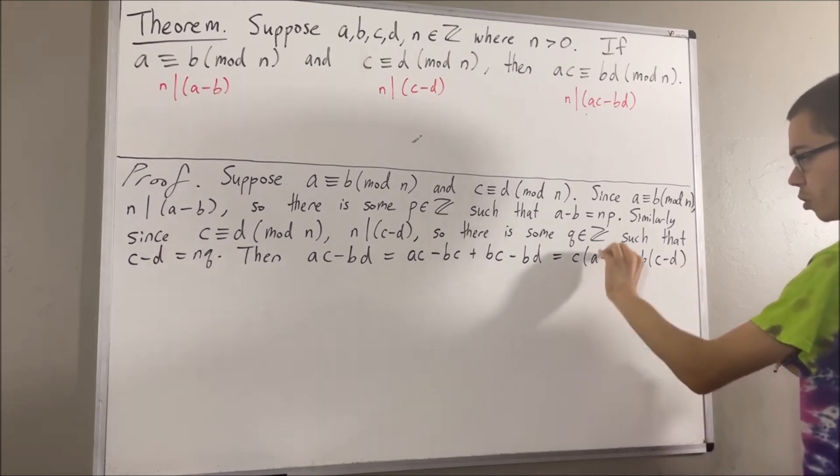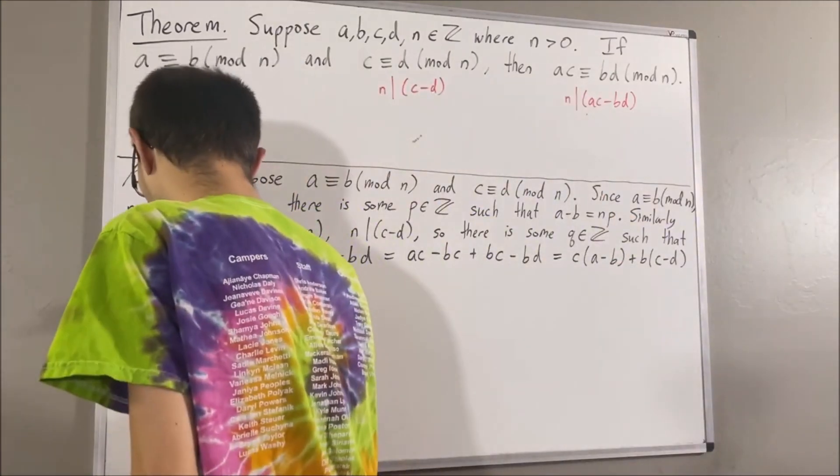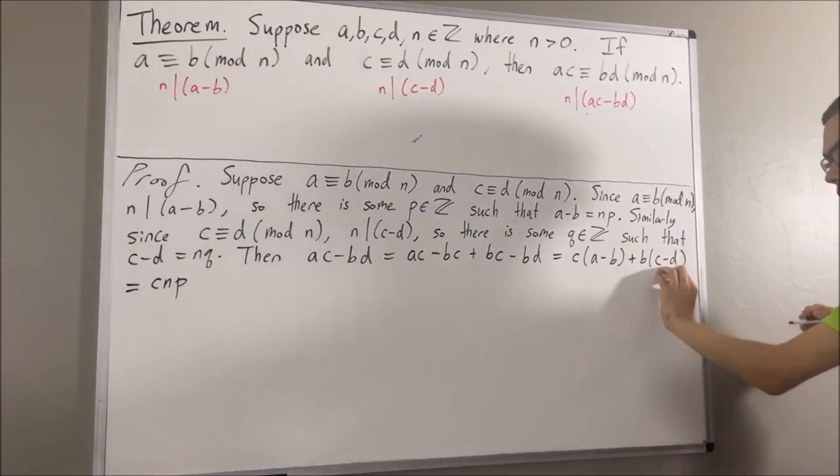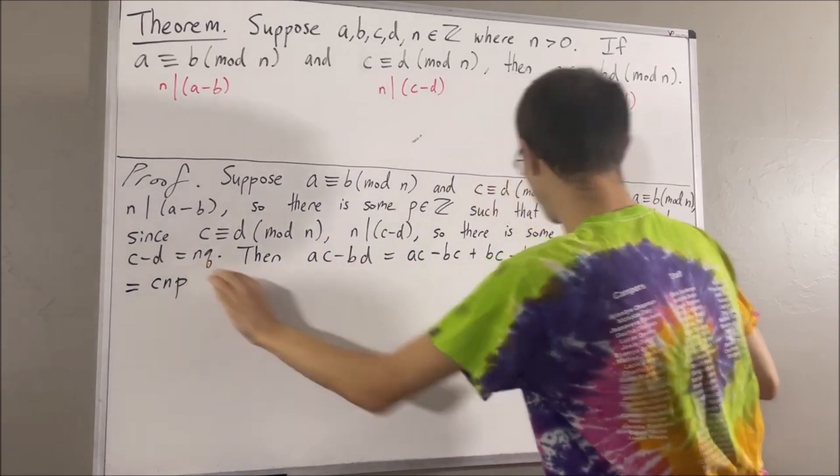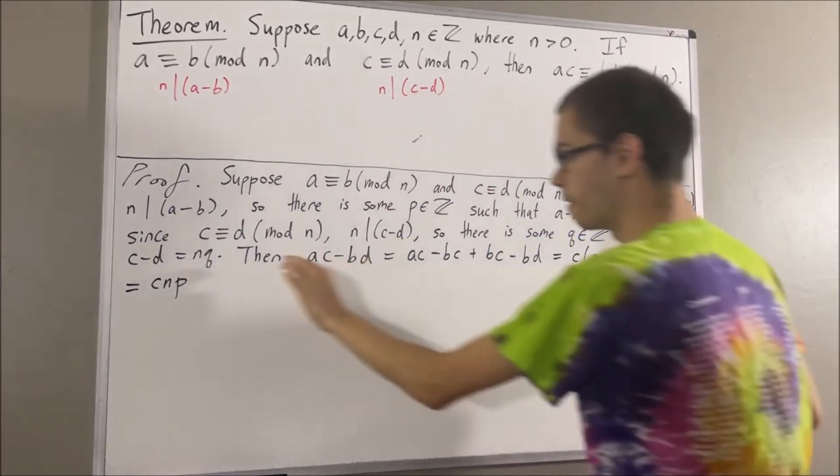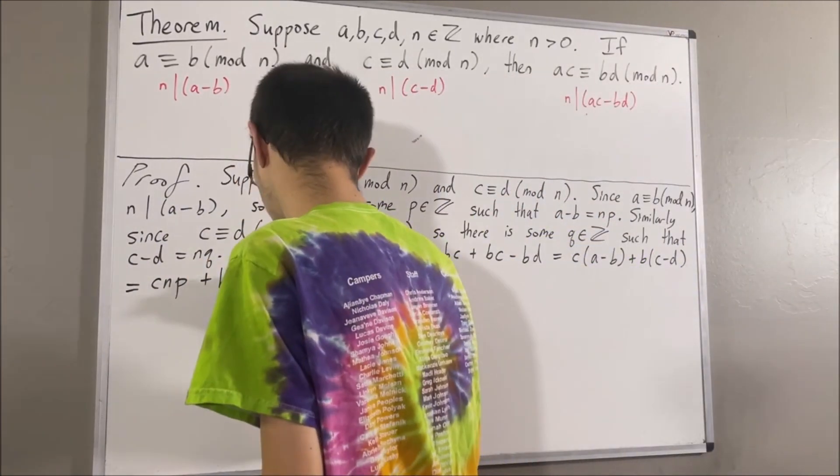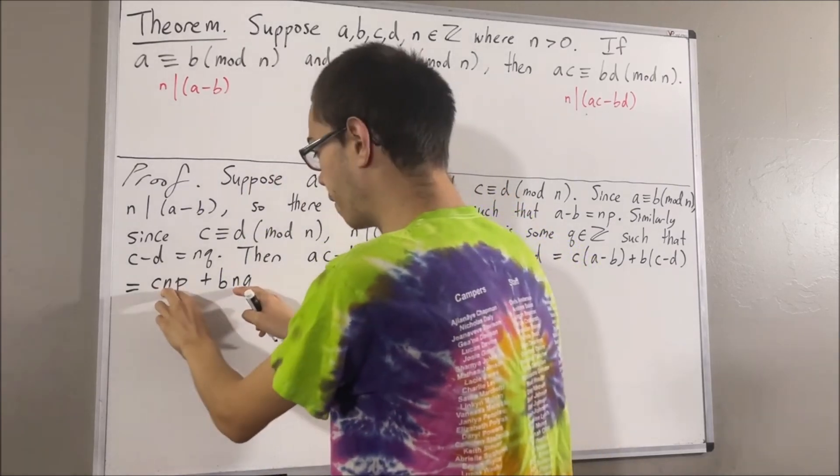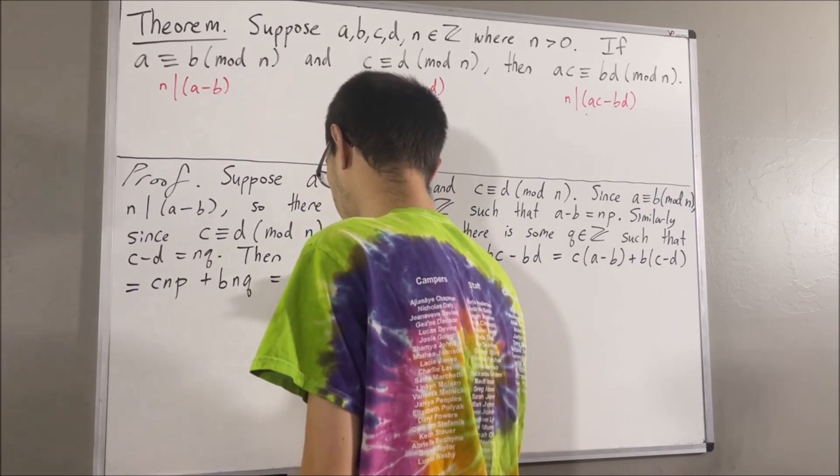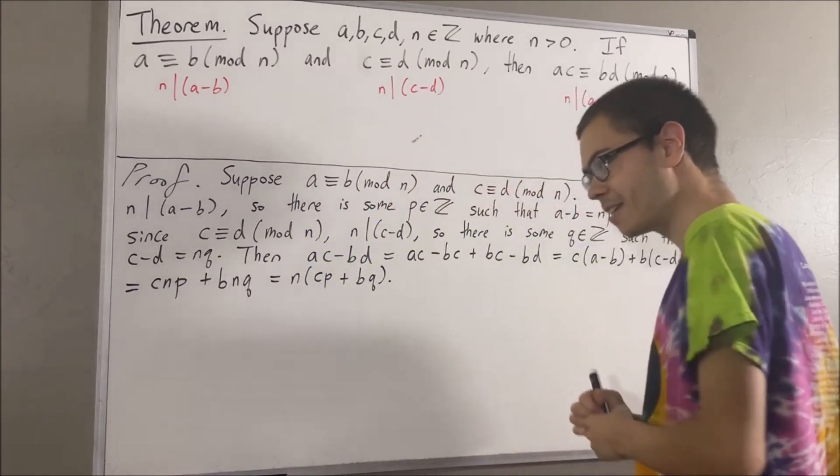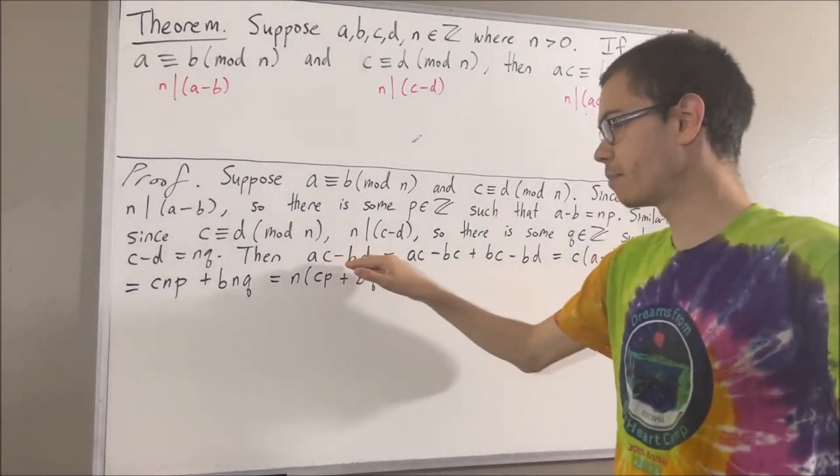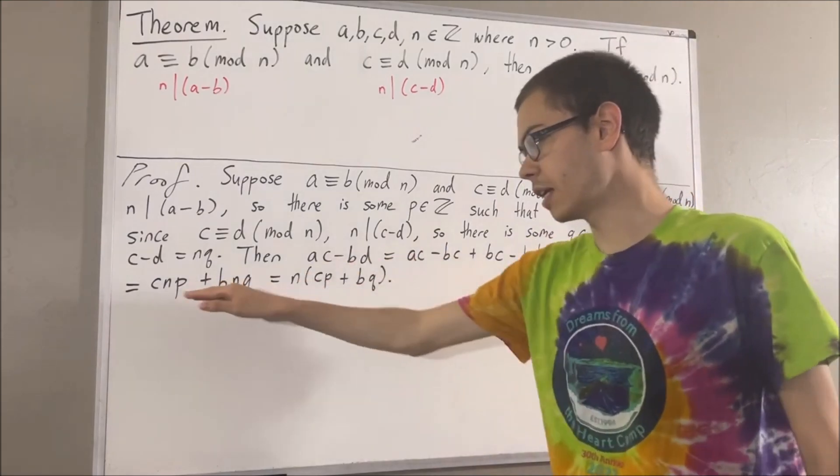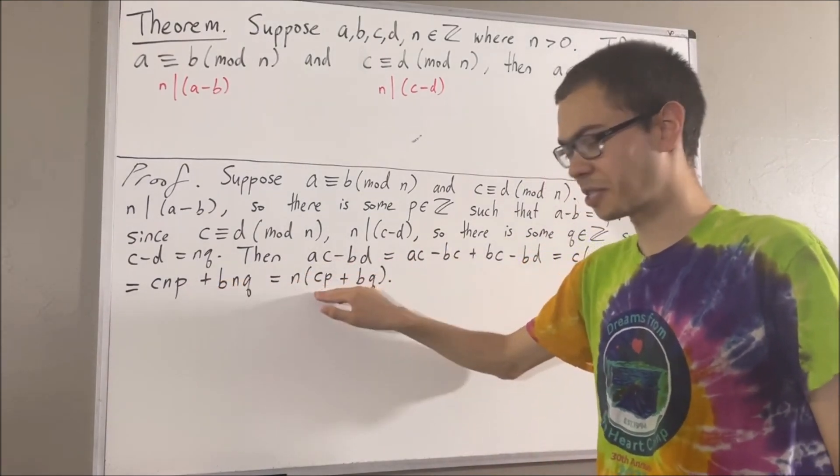And we know that a minus b is equal to np, so we can substitute a minus b for np. And we know that c minus d is equal to nq, so we can substitute c minus d for nq. And now we see that both of our terms have n in it, so we can factor out an n. And as you can see, we've expressed ac minus bd as being equal to n times some integer.